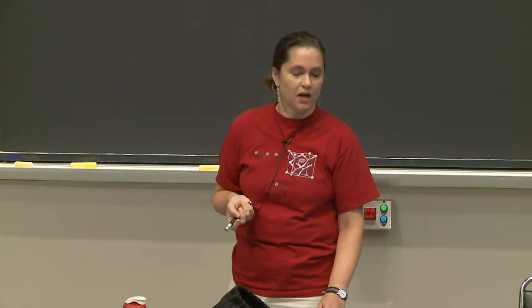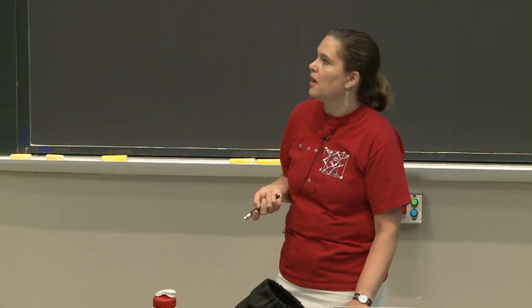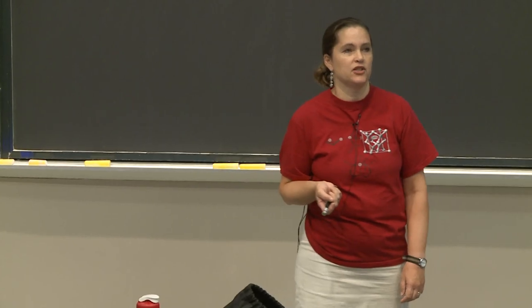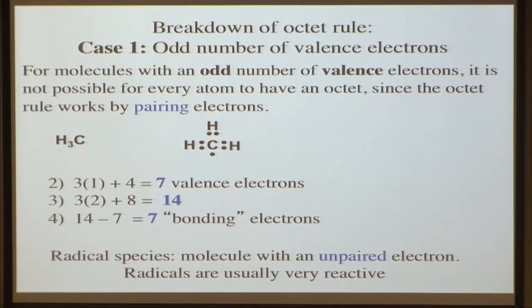So what is this molecule? It is a radical species — a molecule with an unpaired electron. Radical species are usually very reactive. Bonding electrons don't want to be unpaired; they want to be in bonds. So they're highly reactive, searching to either get rid of their electron or get another one.